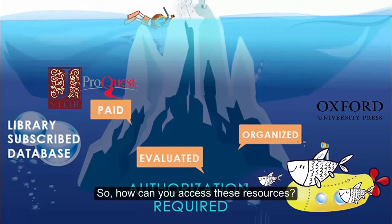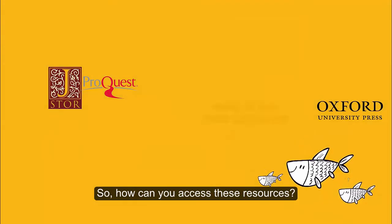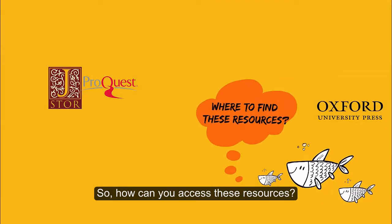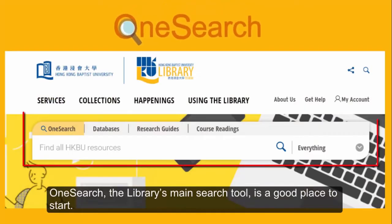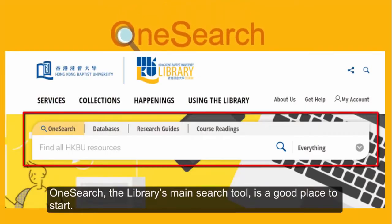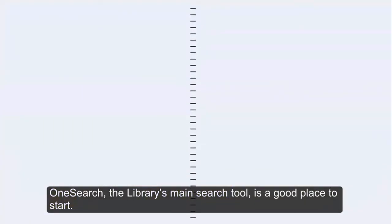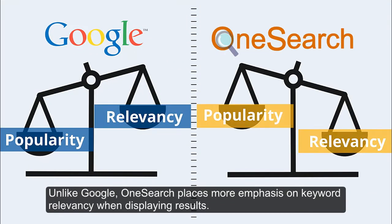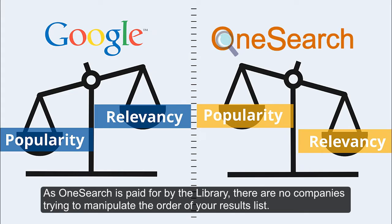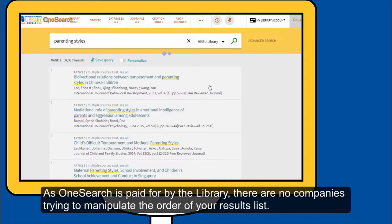So, how can you access these resources? OneSearch, the library's main search tool, is a good place to start. Unlike Google, OneSearch places more emphasis on keyword relevancy when displaying results. As OneSearch is paid for by the library, there are no companies trying to manipulate the order of your results list.